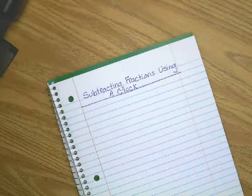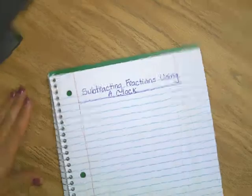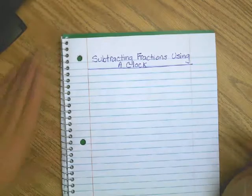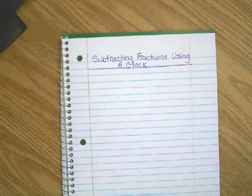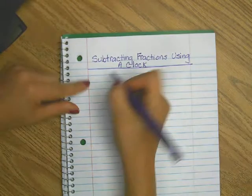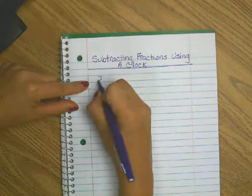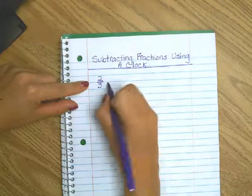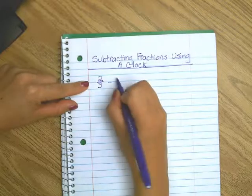Alright, okay, so subtracting fractions using a clock is very similar to adding fractions, okay? We're going to start with our example problem, 2 thirds minus 1 half equals.